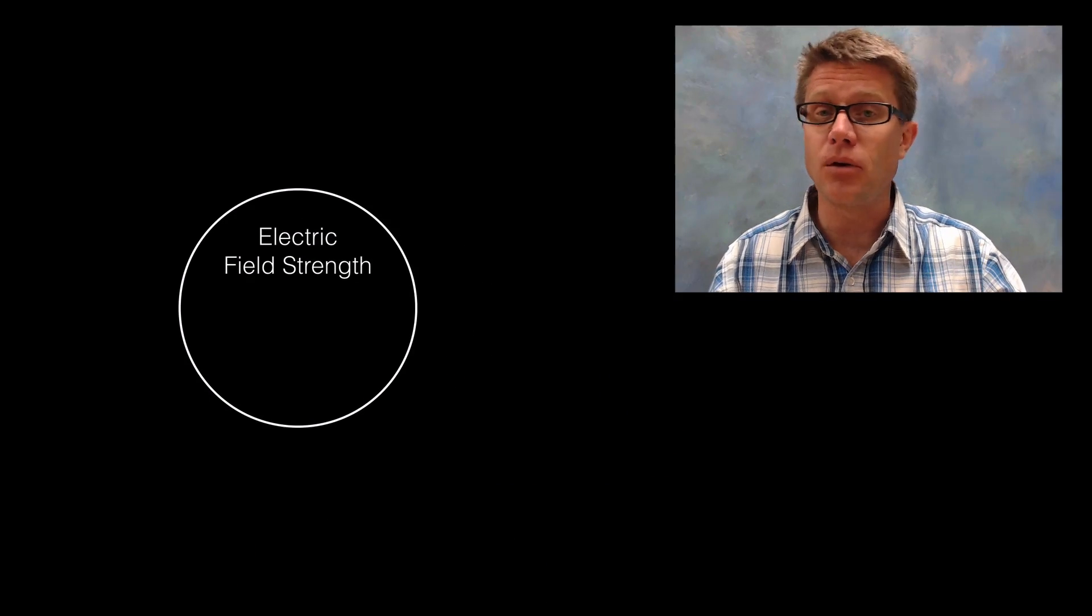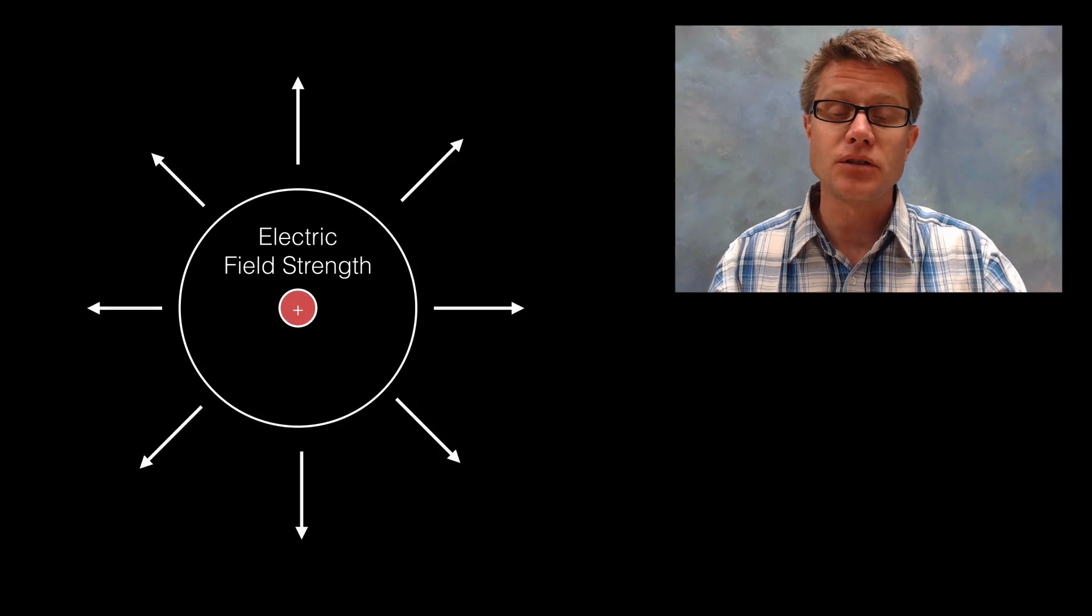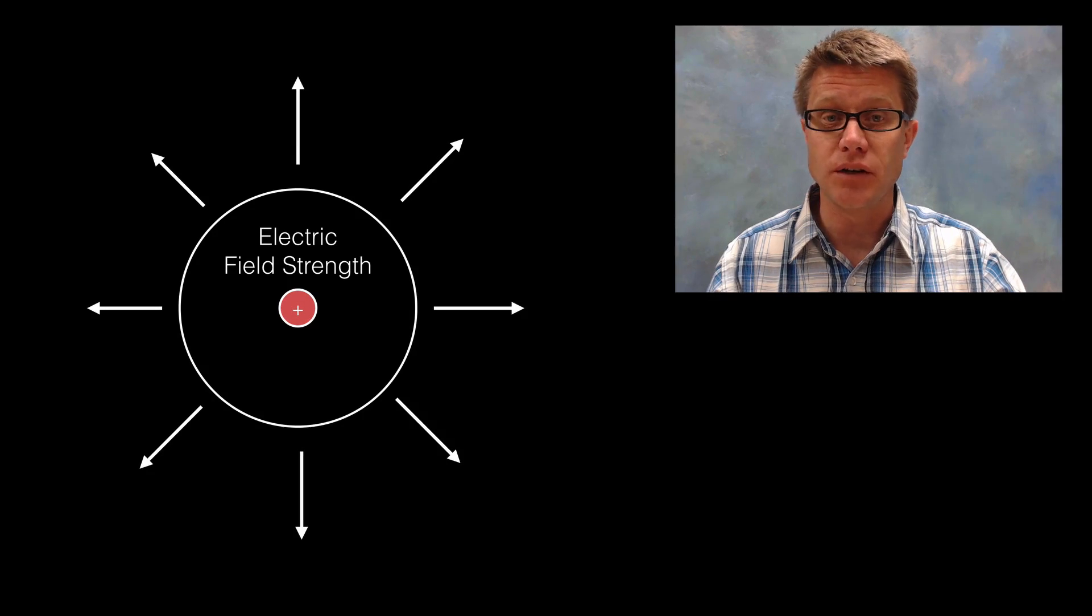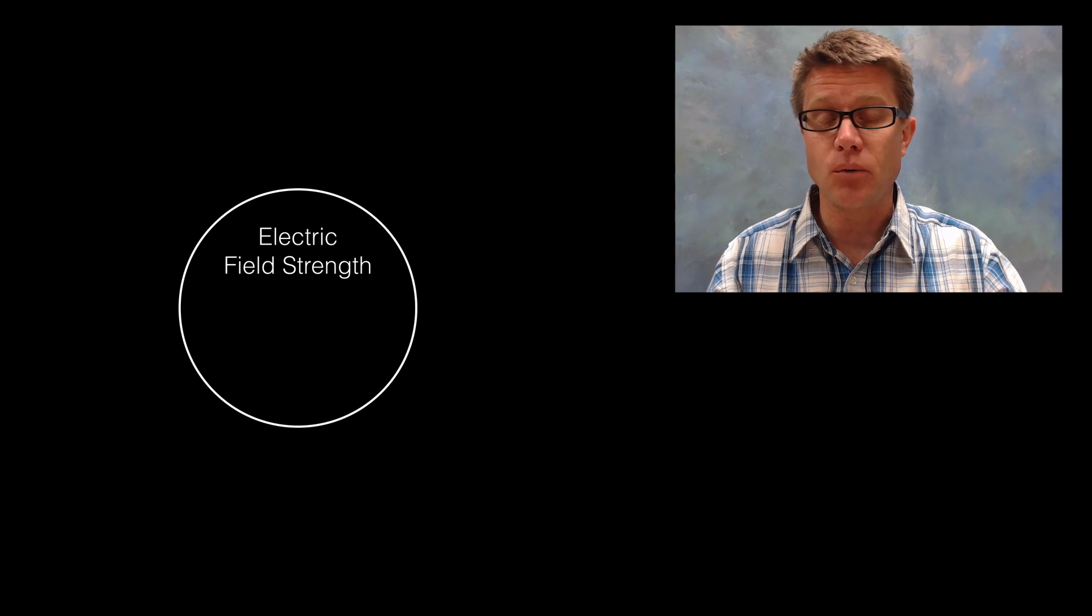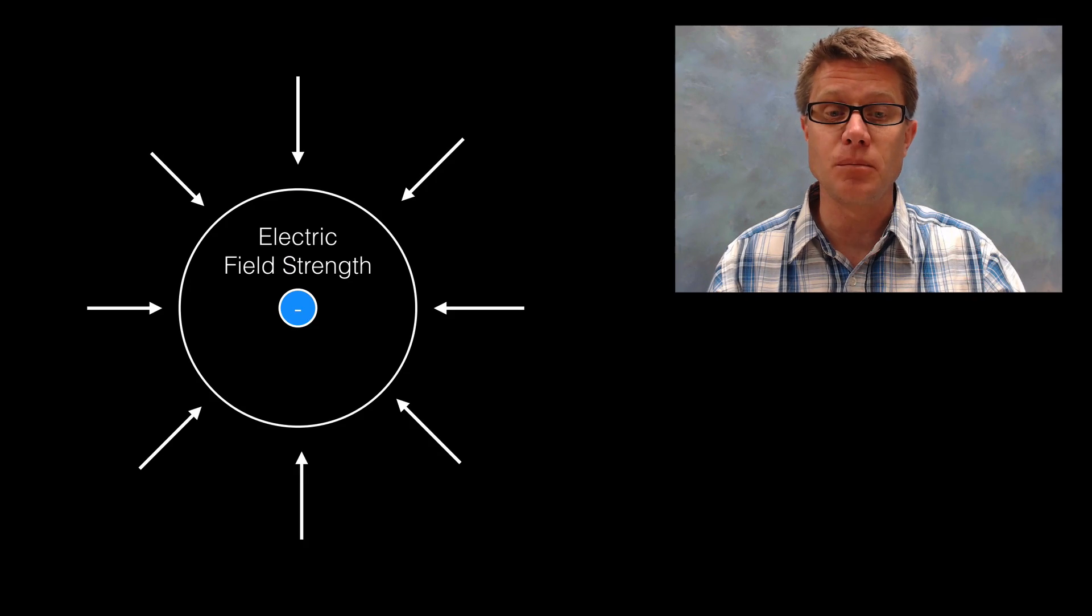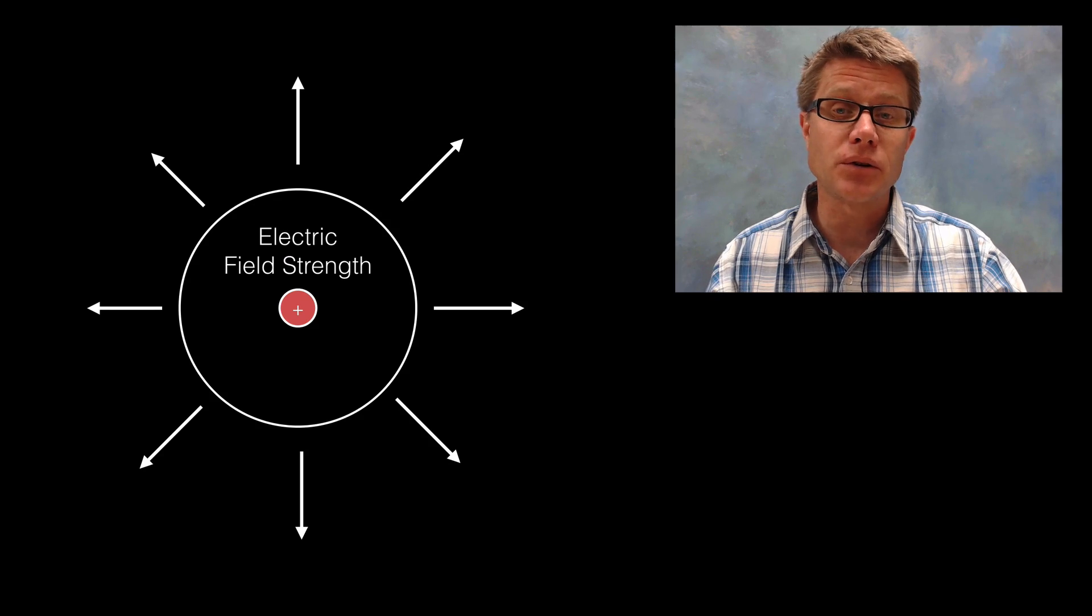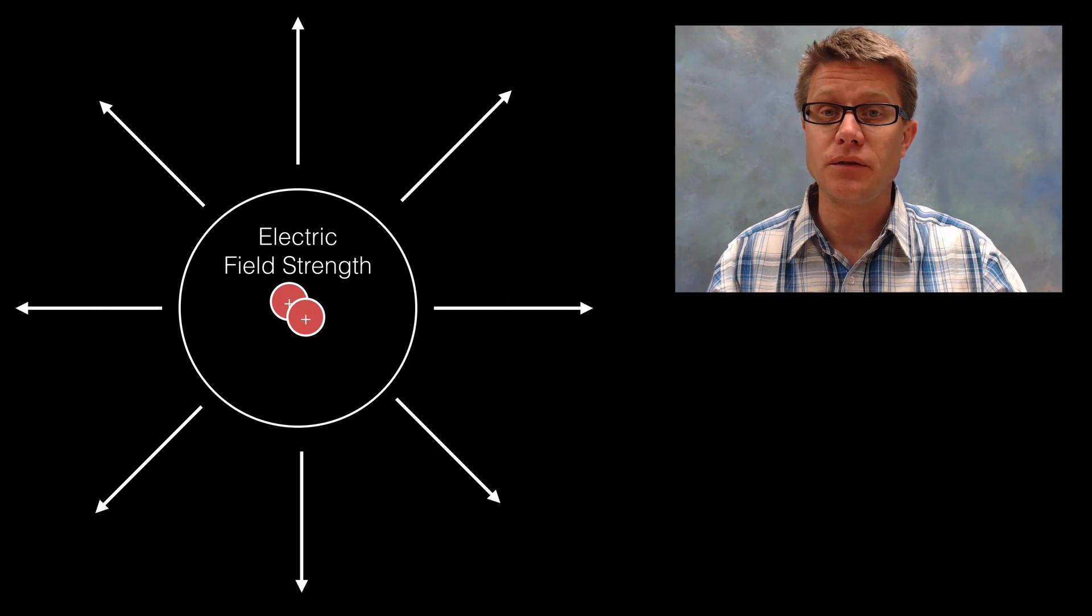In the last video we talked about what generates that change in the electric field strength. So we found if you add a charge to a sphere then we start to get this electric field around it, and we can measure that electric field strength. If we take it away then we take away that electric field. If we add a negative charge all the field lines are going to go to the middle. If we take it away then there is no charge.